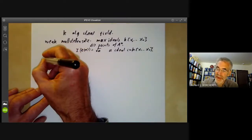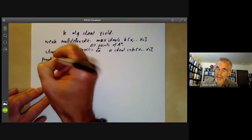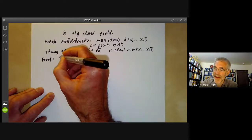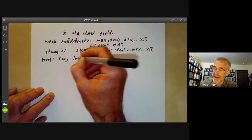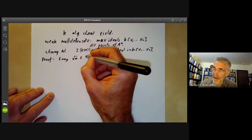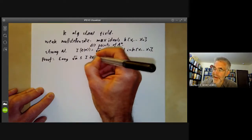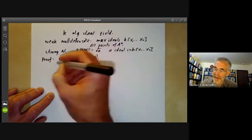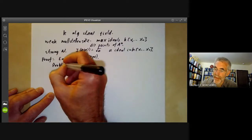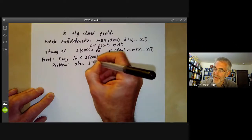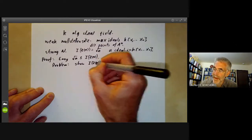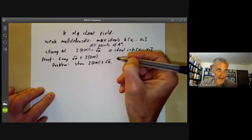Well, in order to prove this, first of all, it's very easy to check that the radical of a is contained in I(Z(a)). And the hard part is to prove is to show that I(Z(a)) is contained in the radical of a.